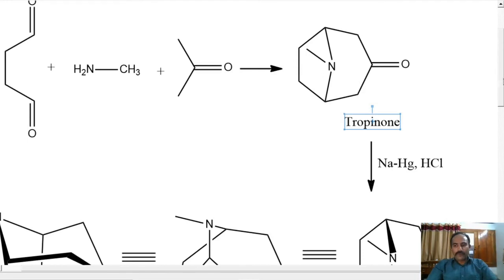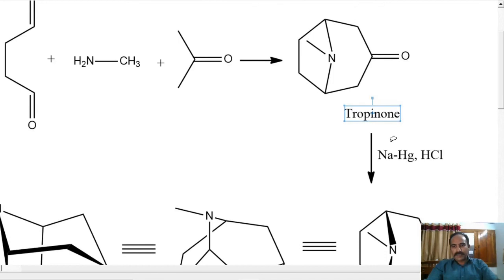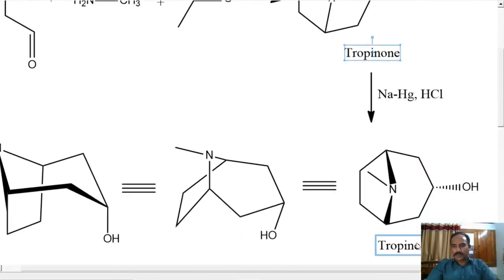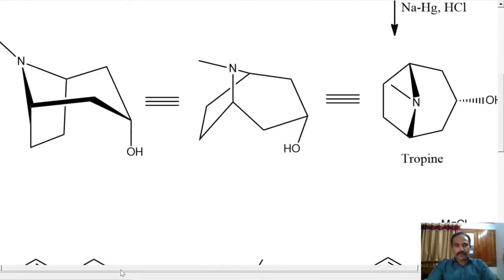Now the reduction of tropinone will give you tropin. The tropinone is reduced — you can use sodium amalgam and HCl, or a metal and an acid like zinc with HI can give you the reduction. The reduction will lead to this alcohol, tropin. Tropin can be written in different ways — they are all the same molecule.